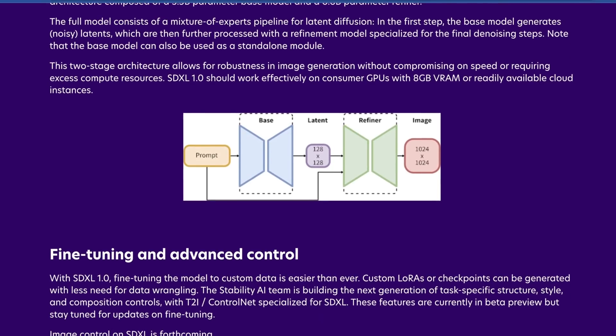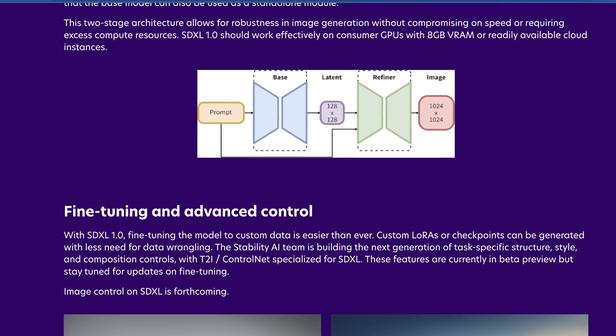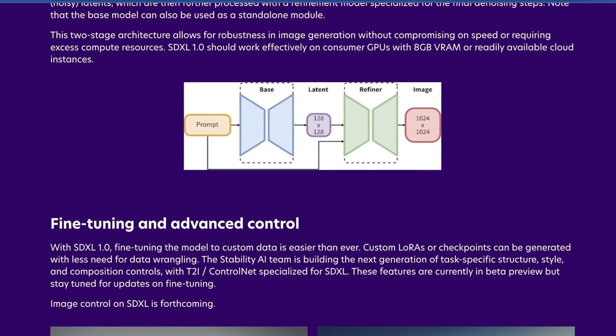The two-stage architecture allows for robustness in image generation without compromising speed or requiring excess compute resources. The reason you can run this on something like an RTX 3080 with only 10 gigs of RAM is because you only have to run one of those models at a time — you don't have to load both and push everything through simultaneously. This is why SDXL should work relatively well on consumer GPUs with only 8 gigs of VRAM.